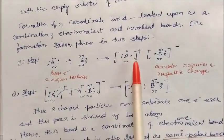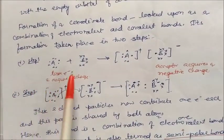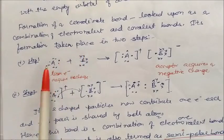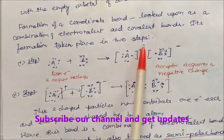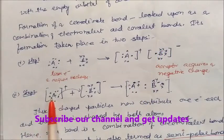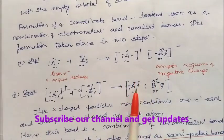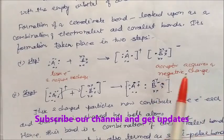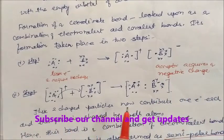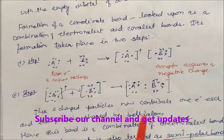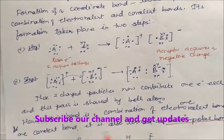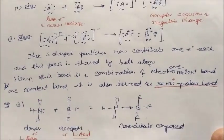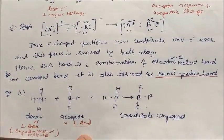Formation takes place in two steps. Step one: atom A loses one electron and acquires a positive charge. Step two: this electron goes to atom B, which then acquires a negative charge. These two charged particles each contribute one electron, and this pair is shared by both atoms. Hence this bond is a combination of one electrovalent bond and one covalent bond — that is why it is also termed as the semi-polar bond.